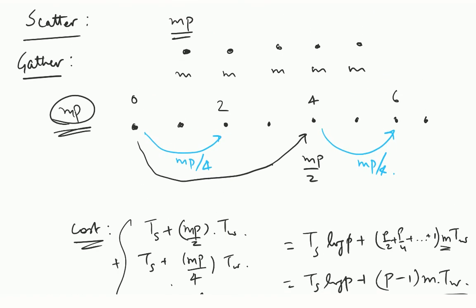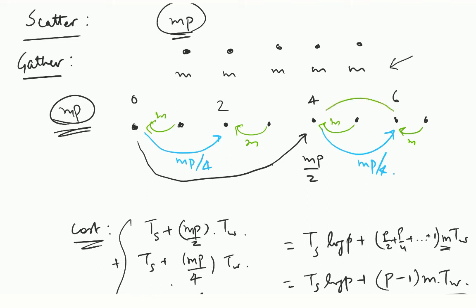How do you implement gather? Initially all nodes have m amount of data, and at the end you want to gather all that data onto one node of size mp. It proceeds in the reverse order. In the first iteration, each node sends m amount of data to its partner. In the next iteration, 2m data is sent, and so on. It is exactly the opposite of scatter.